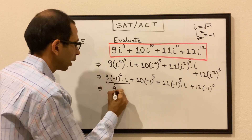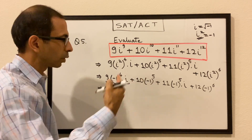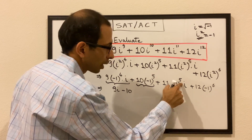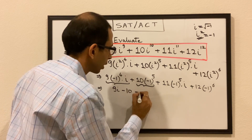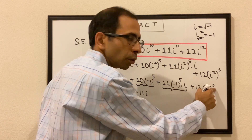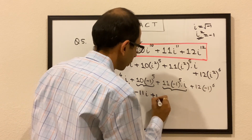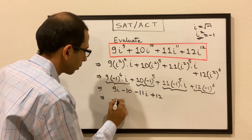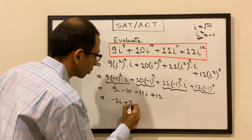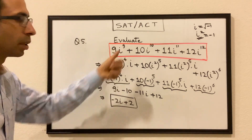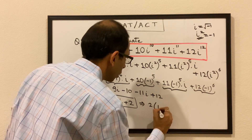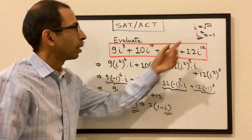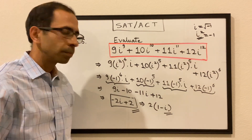Continuing: (-1)⁵ × i = -i, so 11(-i) = -11i. And (-1)⁶ = +1, so 12(1) = 12. Combining: (9i - 11i) = -2i and (-10 + 12) = 2. So the result is 2 - 2i, or factoring out 2: 2(1 - i). All we did was rewrite in terms of i² and plug in -1.